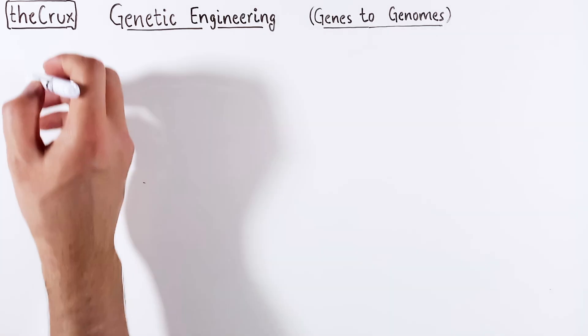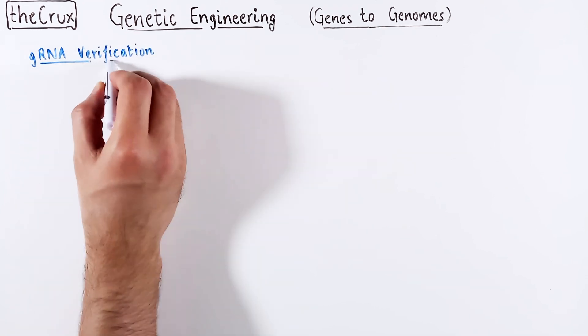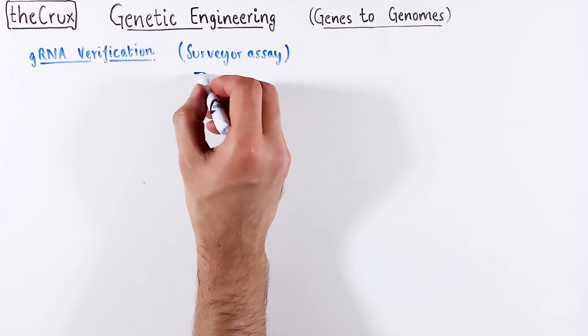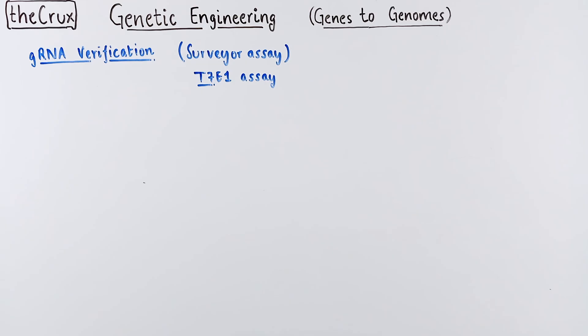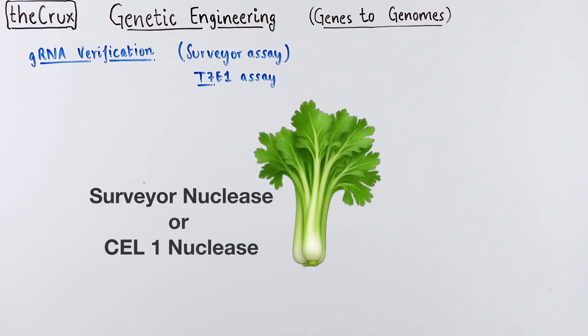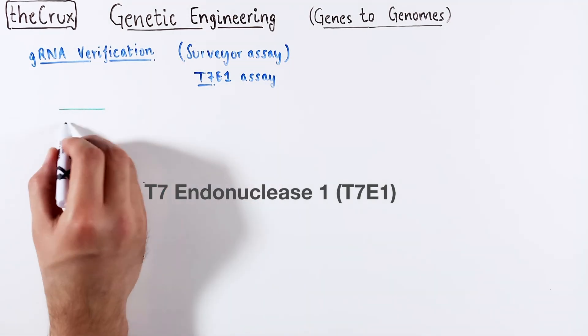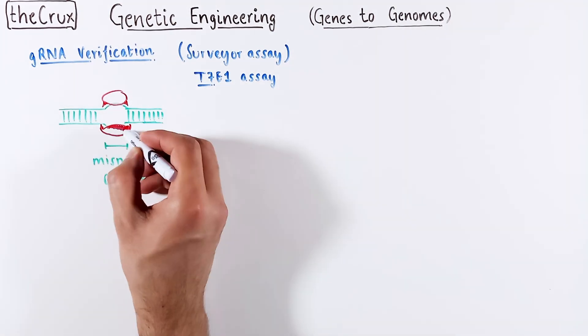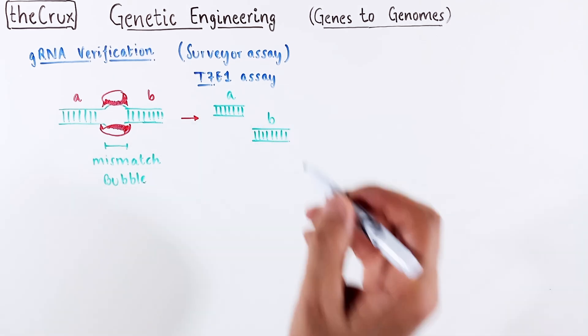So, you've picked out guides, or a set of guides, that you want to use, and typically you want to experimentally measure their efficiency. This verification is done using a surveyor assay, or a T7 endonuclease assay. Both assays have the same concept. The difference is that one uses surveyor nucleus, also called cell 1 nucleus, from celery. The other uses T7 endonuclease 1 from T7 bacteriophage. Both nucleases do the same job. They find mismatched location in a double-stranded DNA duplex, and make a double-stranded cut in that mismatched bubble.